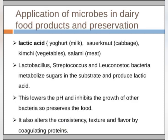The lactic acid lowers the pH and inhibits the growth of other bacteria, thereby preserving the food. It also alters the consistency, texture, and flavors by coagulating proteins. Different microbes are used to preserve food so that it remains usable for longer and does not spoil.